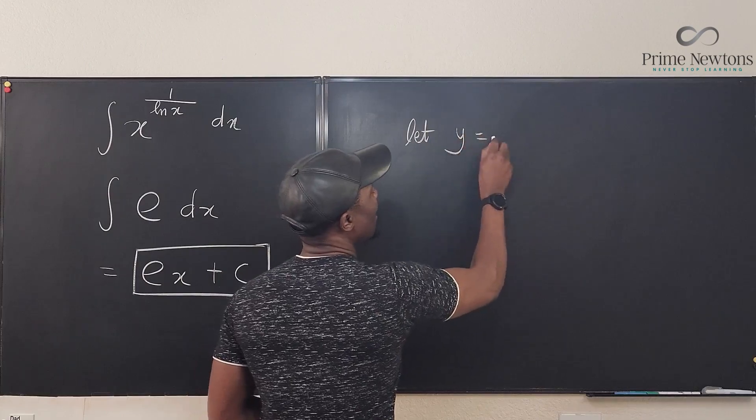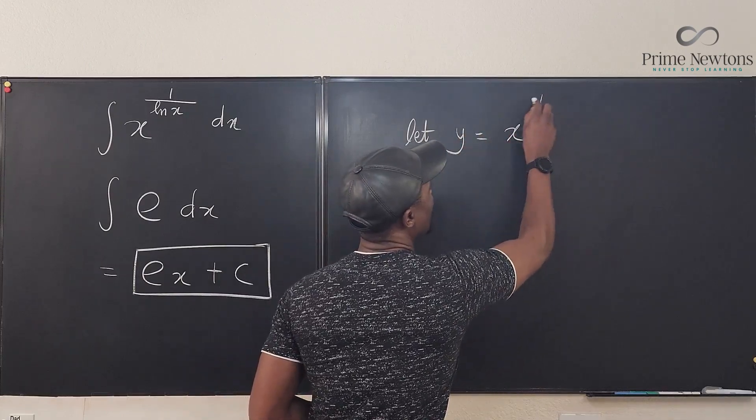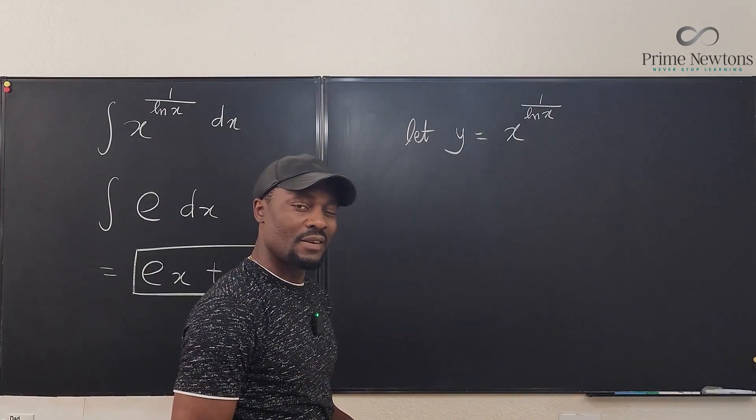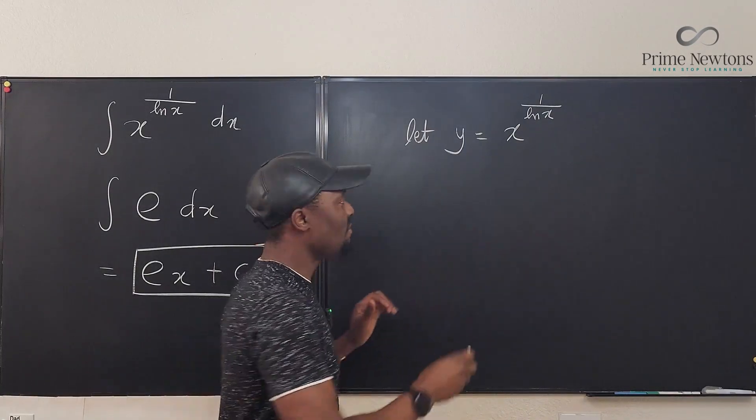Let y be equal to x to the 1 over natural log of x. Let's take the natural log of both sides.